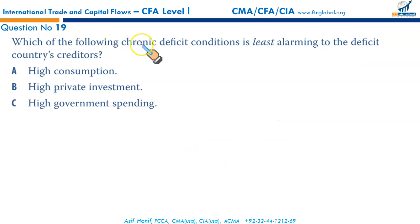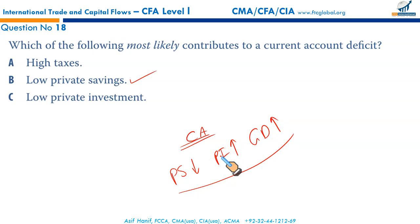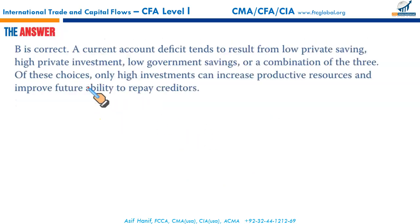Which of the following chronic deficit conditions is least alarming to the deficit country's creditors? Low private savings, high private investment, and government deficits can all result in a current account deficit. Out of these three, high private investment is the condition creditors are most comfortable with, because high investment can increase productive resources and improve the country's future ability to repay creditors. So high private investment is the correct option B.